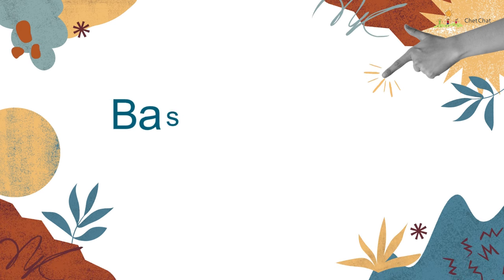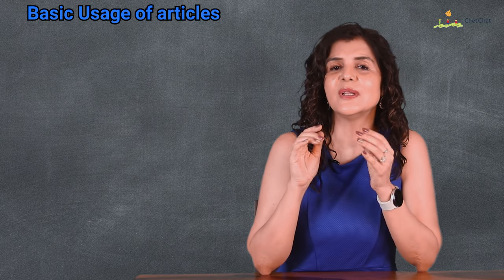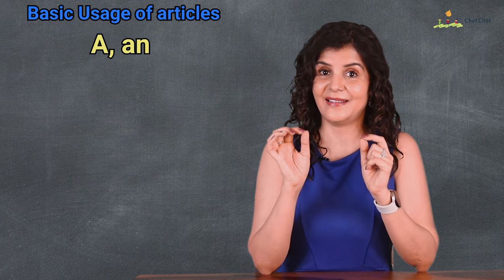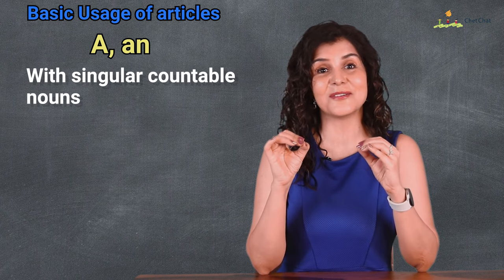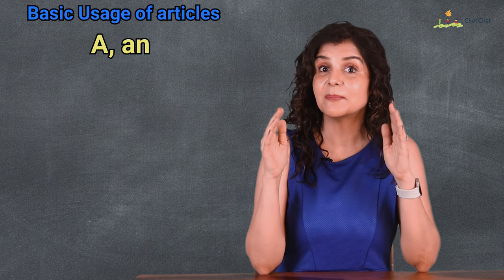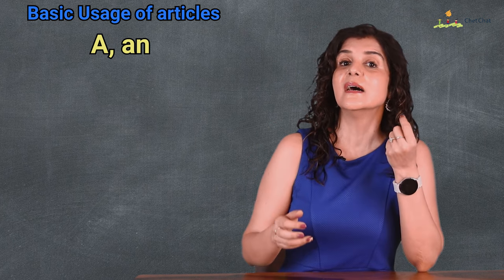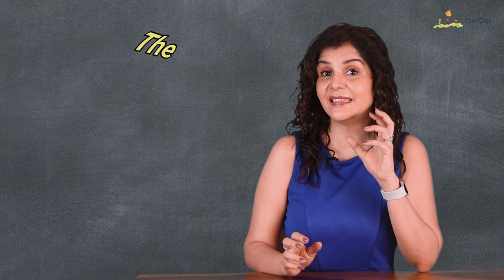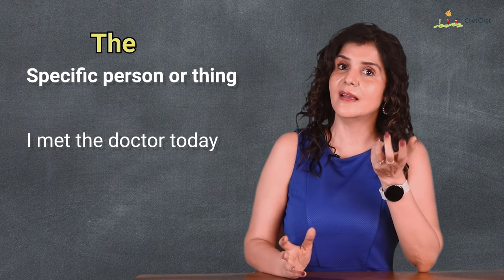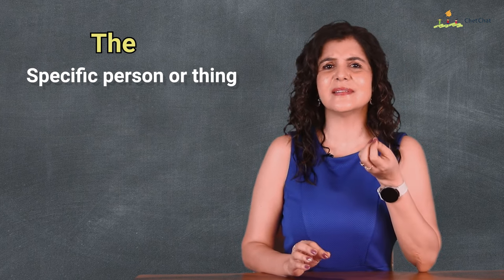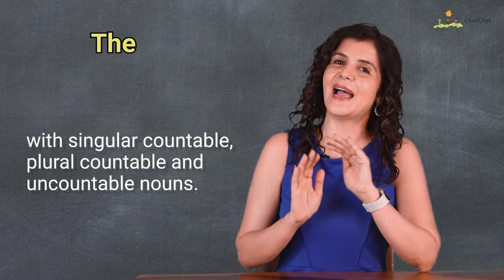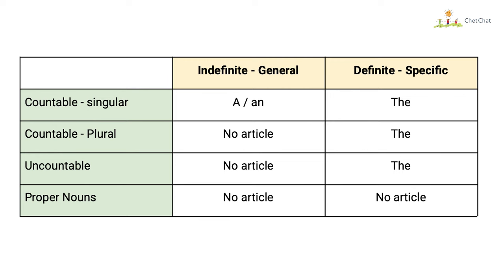Let's begin with the indefinite articles a and an. A and an are used to talk about one single thing, so we use them with singular countable nouns. A bag means one bag; an orange means one orange. These are indefinite articles since the person or thing they refer to is not specific — for example, a doctor means any doctor. The definite article the points to a particular person or thing: I met the doctor today means I met a specific doctor. The is used with singular countable, plural countable, and uncountable nouns.